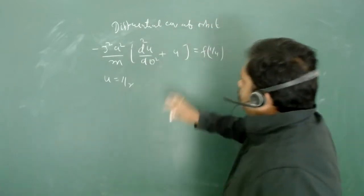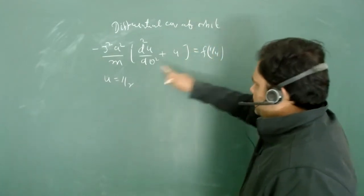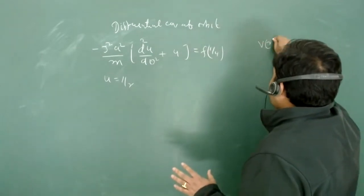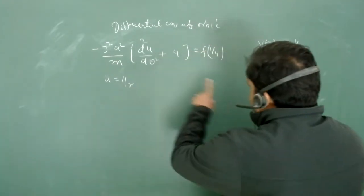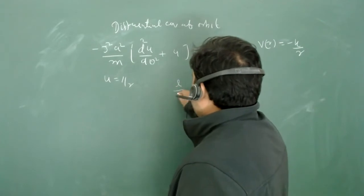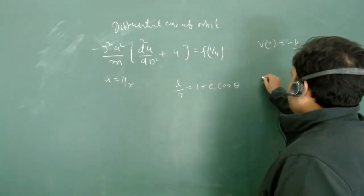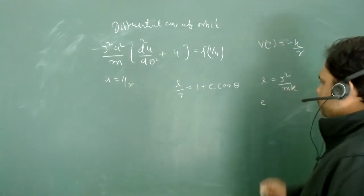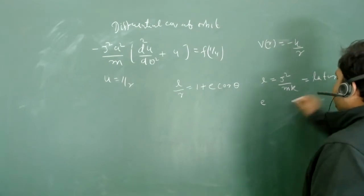Sometimes you have the equation of orbit and you can work out the force from it. For the central force problem, we generally work with potential V(r) = −k/r, which is Kepler's problem. Solving this gives the equation of orbit: l/r = 1 + e·cosθ, where l = j²/mk is the latus rectum, and e is the eccentricity.